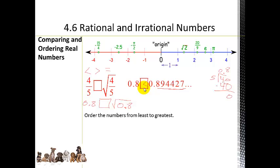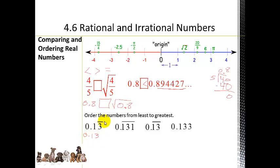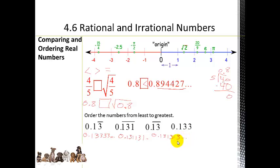The next type of problem is ordering from least to greatest. These numbers have repeating bars, so let's write them out. 0.13 repeating is 0.1313... The second number 0.131 repeating (bar over all three digits) is 0.131131131... The third number has a repeating bar over 13, making it 0.131313... These all have patterns so they're rational.